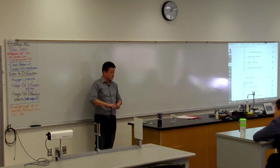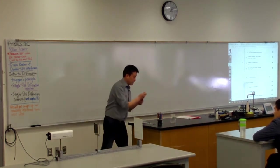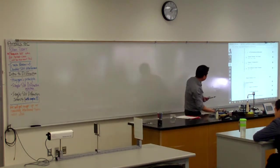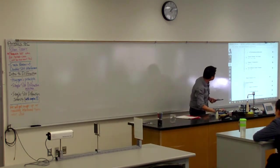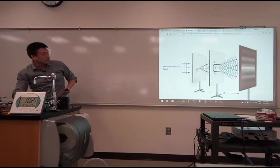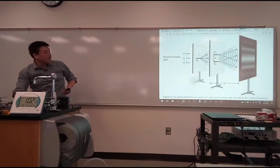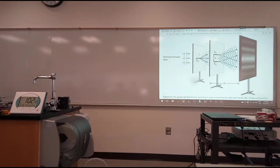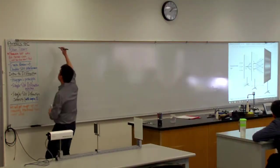With the double slit interference, this is what we covered. We were looking at the situation — there's a picture of the experiment. In our experiment we are using a laser instead of a single slit, so it's a lot easier for us. The experiment is set up with two slits separated by some distance d, and you get this interference pattern that you have seen in the previous lecture.